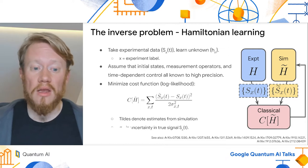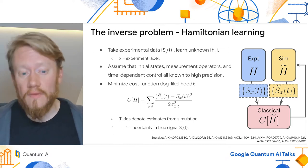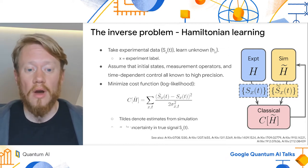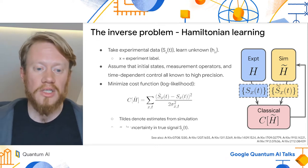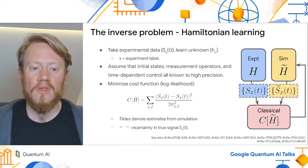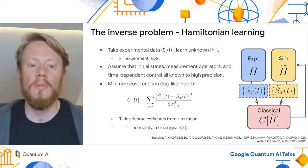Now, the problem we want to study is Hamiltonian learning, which is the inverse problem of generating the signal I described on the previous slide. I'll generalize a bit here and consider learning from a set of different experiments, which I'm going to label by an index x.